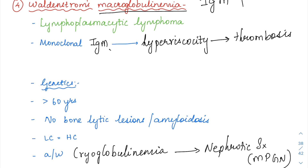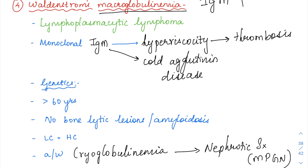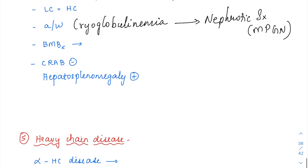Apart from that, IgM is associated with cold agglutinin disease. In RBC conditions, IgM is associated with cold immune hemolytic anemia — specifically cold agglutinin disease, which is mediated by IgM. So wherever IgM is elevated, it is associated with cold autoimmune hemolytic anemia. Therefore, Waldenstrom's macroglobulinemia is associated with cold autoimmune hemolytic anemia.